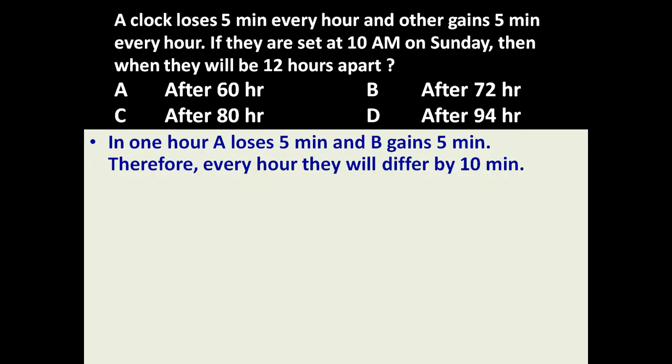To answer this question, in one hour A loses 5 minutes and B gains 5 minutes. It means every hour they will differ by 10 minutes because one clock is gaining 5 minutes and another is losing 5 minutes. So every hour the difference between them will be by 10 minutes.